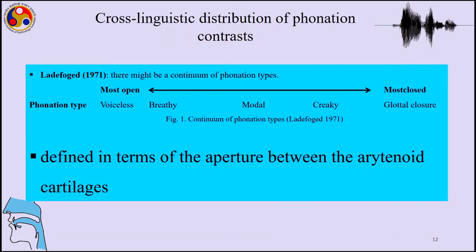This is the cross-linguistic distribution of phonation contrast, from Ladefoged 1971 — a simplistic diagram of the continuum of phonation types. This is defined in terms of the aperture between the arytenoid cartilages of the larynx. When the aperture is most open we have a voiceless sound, and we know that sounds like 'purr' versus 'burr' differ based on voicing.